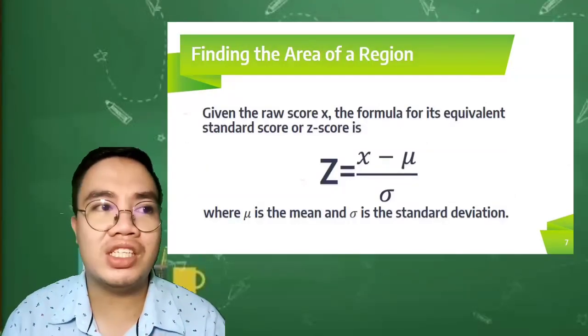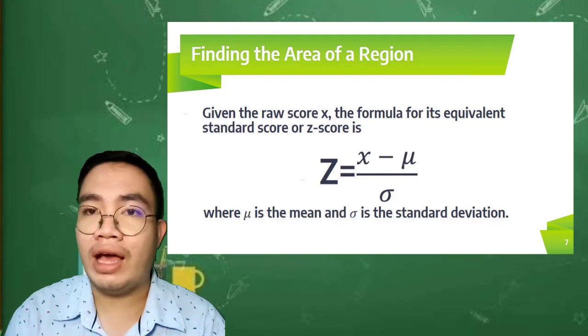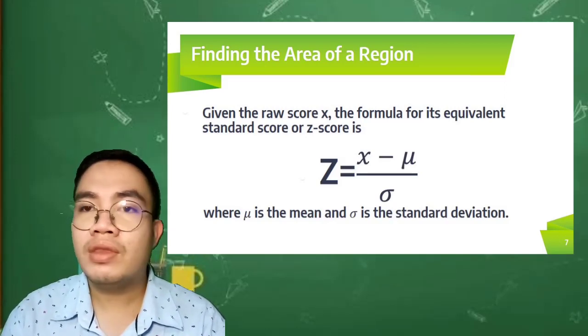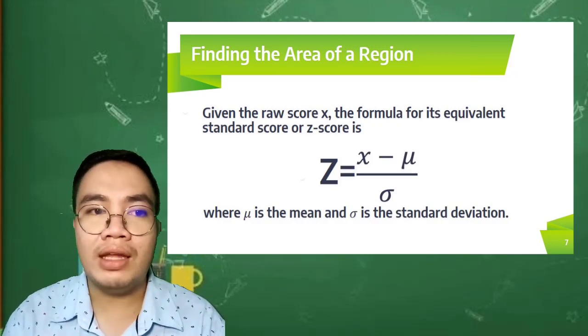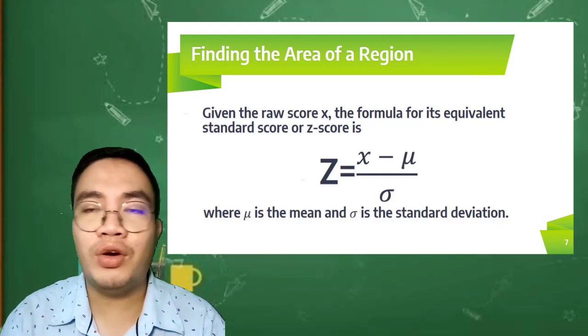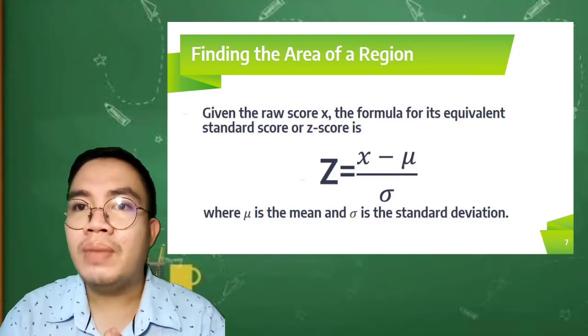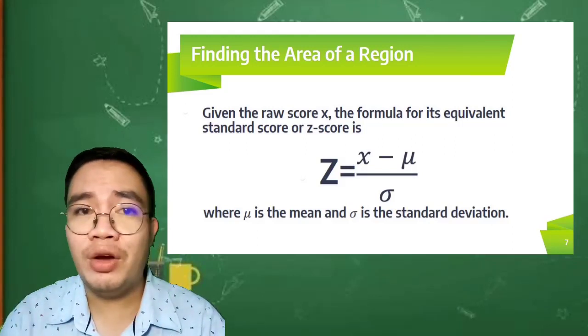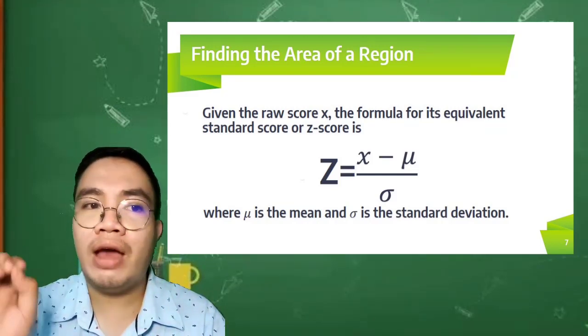In finding the area of a region, given the raw score X, the formula for its equivalent standard score or Z-score is: Z equals X minus our mean divided by our standard deviation. Try to take note, there are values which are positive, especially when your X or the raw score is higher than your mean. For example, if the raw score is 90 and our mean is 85, it will give you a positive answer. However, if the value is lower than your mean, then the answer will give you a negative value. In any case, you have to divide it by your standard deviation to get the value of your Z-score.